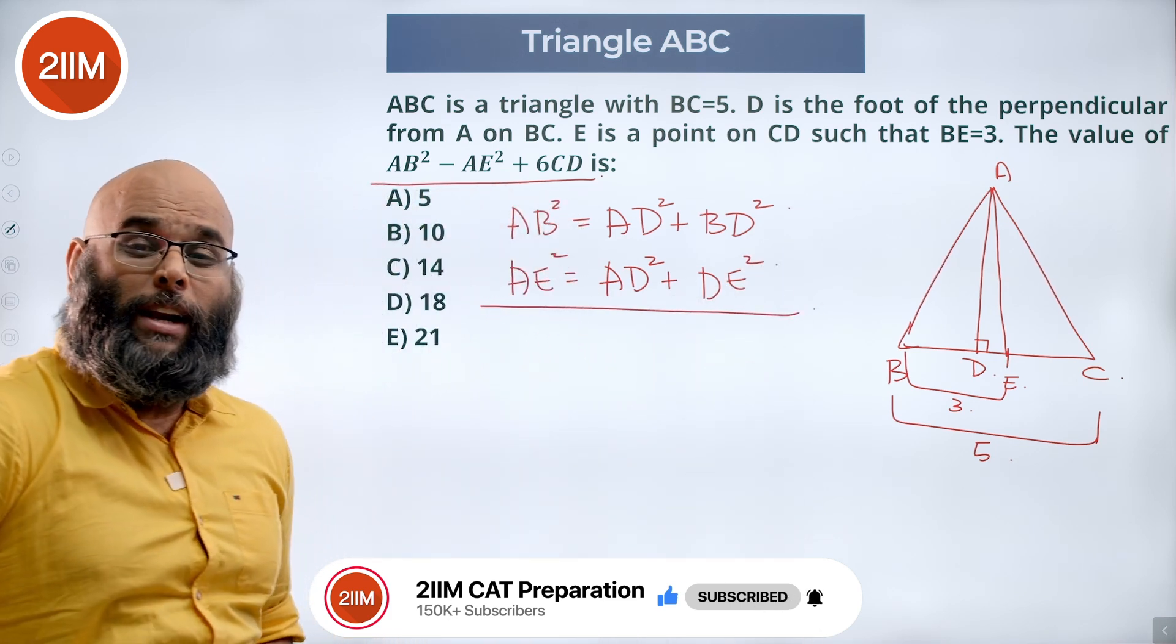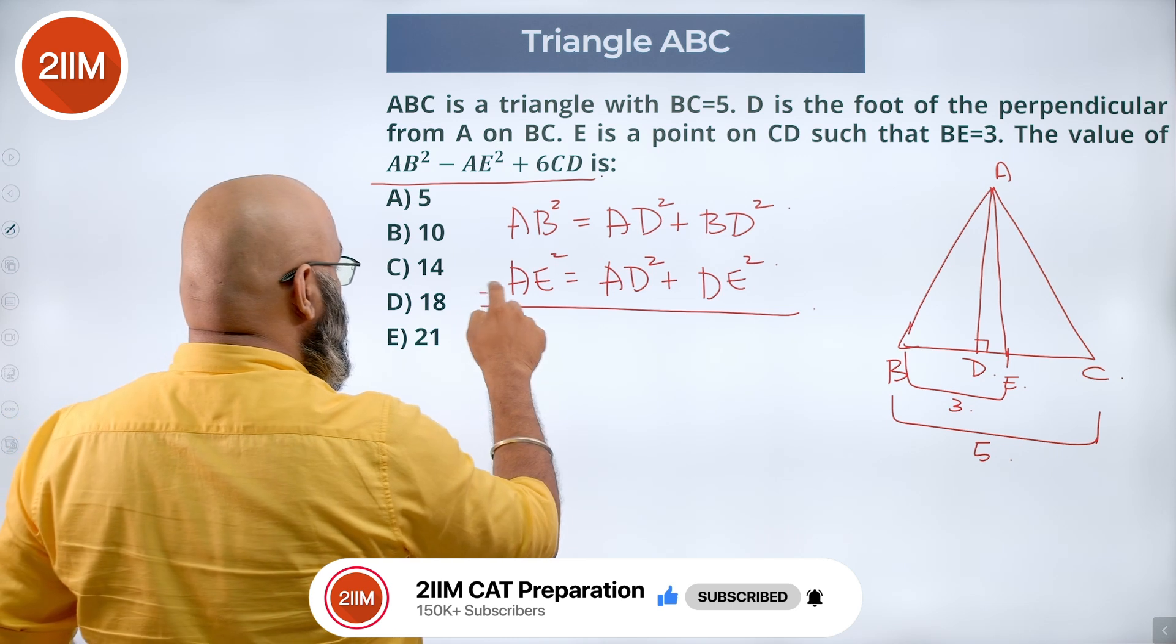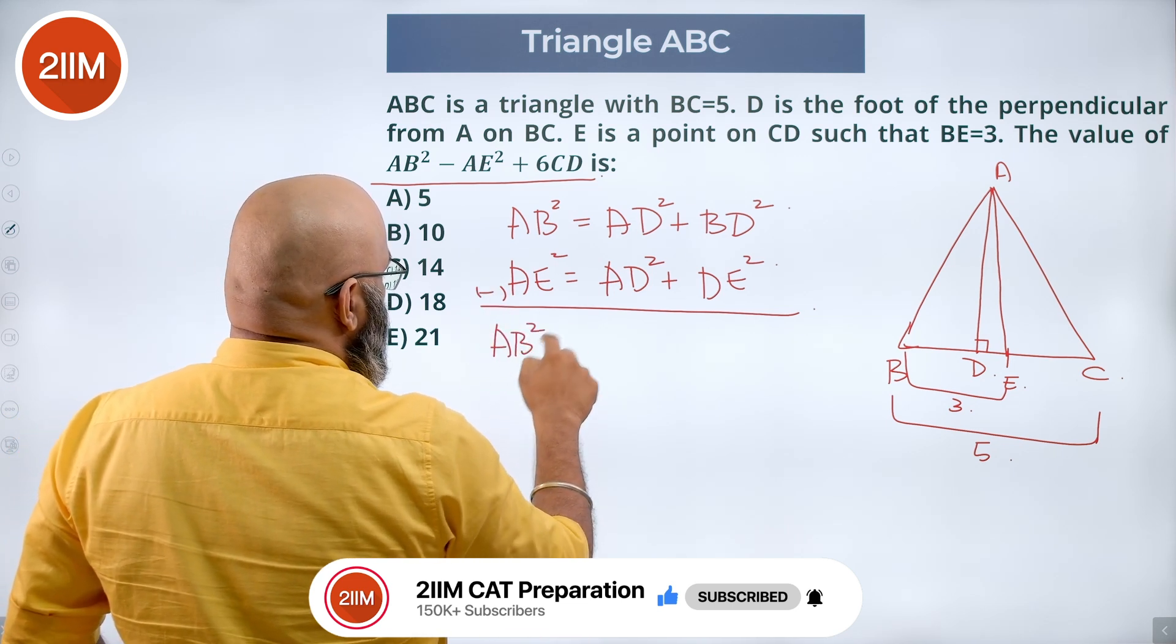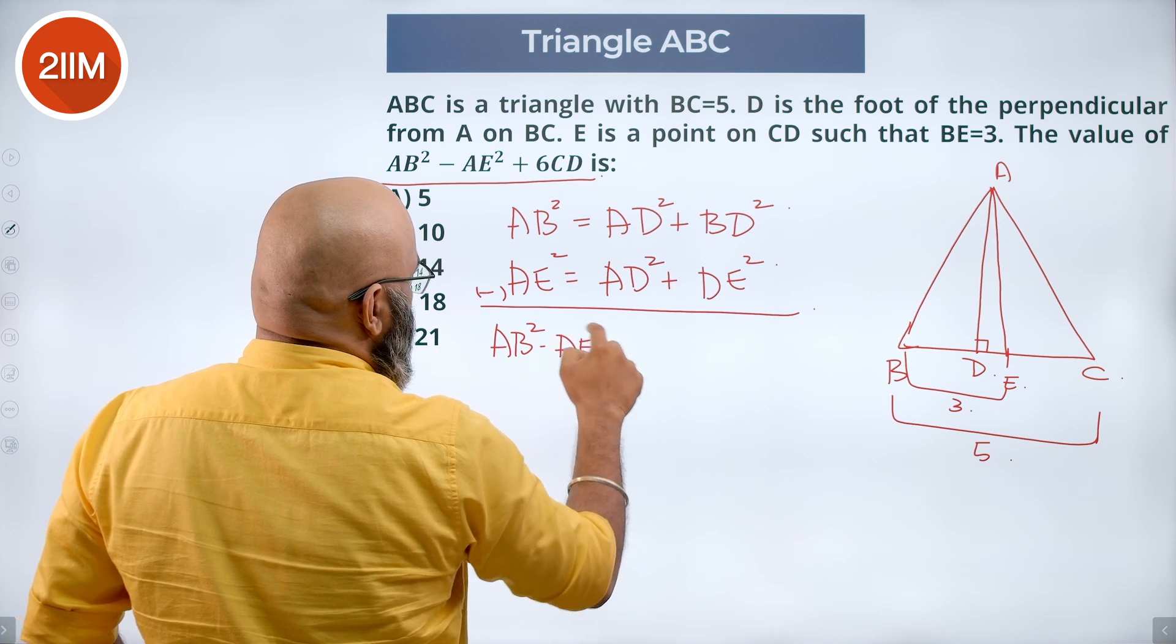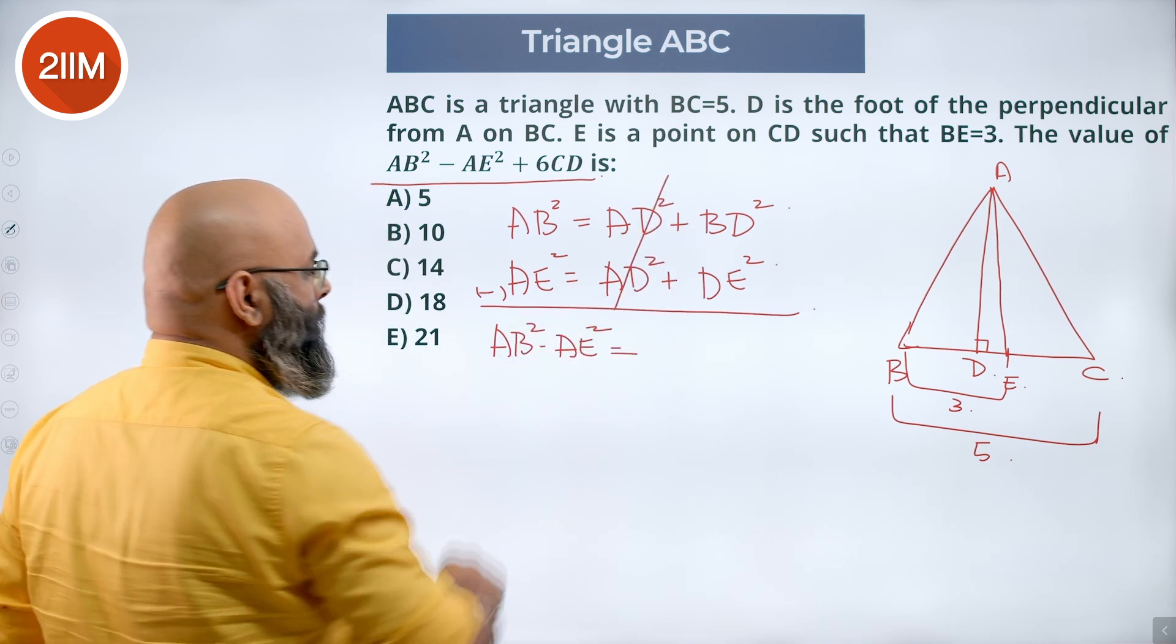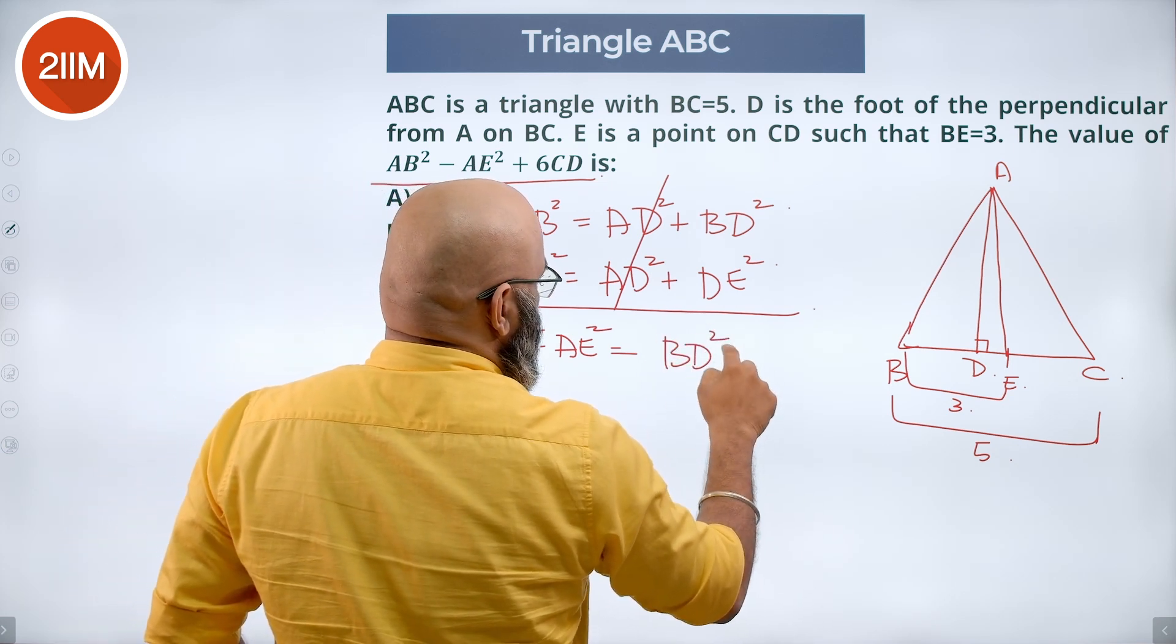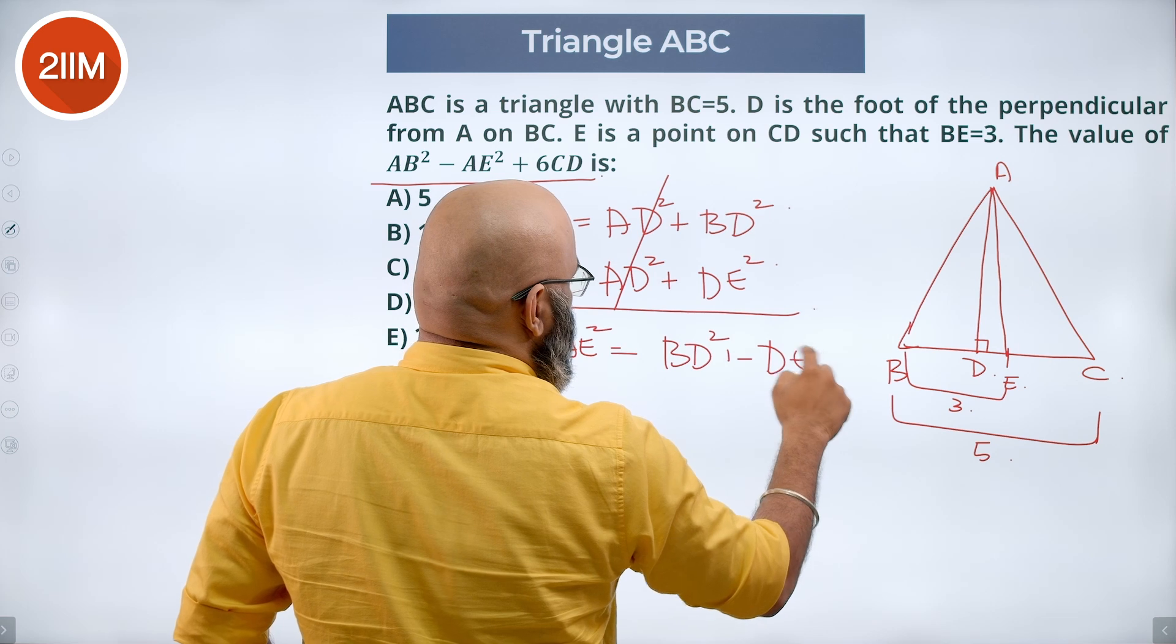Now we need AB square minus AE square. So we can simply subtract this equation. So you will get AB square minus AE square is equal to AD square, AD square gets cancelled. We will be left out with BD square minus DE square.